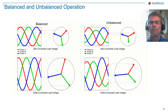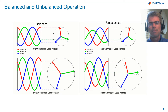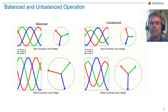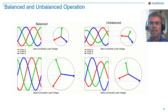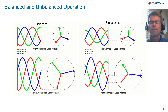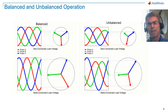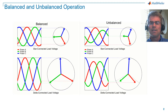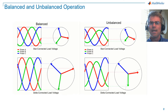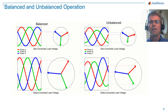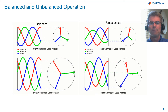Here we can see a visual representation of a balanced system on the left and an unbalanced system on the right. Balanced three-phase voltage has equal voltage magnitudes in each phase, with phase B lagging phase A by 120 degrees and phase C leading phase A by 120 degrees. Similarly, balanced three-phase current has equal current magnitudes in each phase, with phase B lagging phase A by 120 degrees and phase C leading phase A by 120 degrees. An unbalanced system is anything that does not meet this criteria.